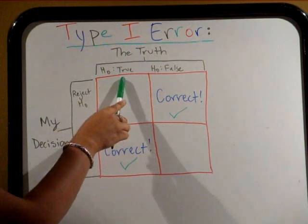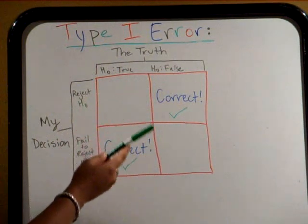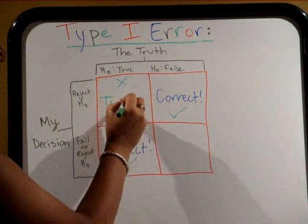But if the null hypothesis is true and we reject it, then we have made an incorrect decision committing a type 1 error.